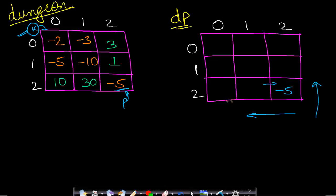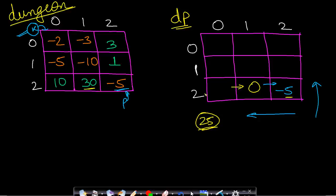Cell 1,0: maximum of dp[1,1]=minus 10 and dp[2,0]=0 is 0, plus current cost minus 5 gives minus 5. Cell 0,2: only one direction (down), so dp[2,2]=minus 5 plus current cost 3 equals minus 4, write minus 1. Wait — dp[1,2]=minus 4 plus dungeon[0,2]=3 gives minus 1.